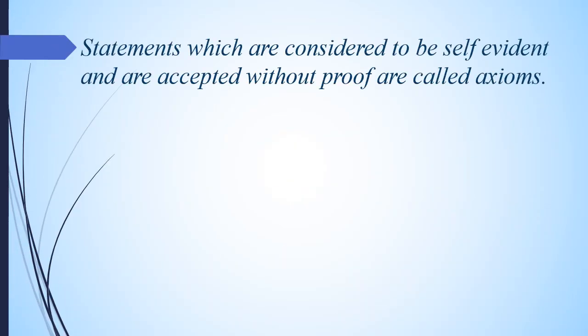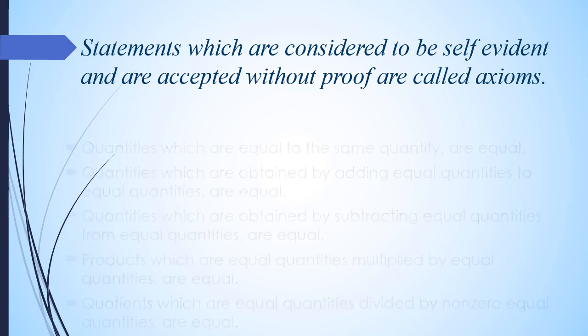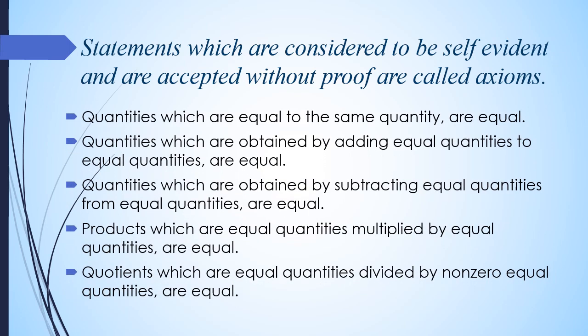Statements which are considered to be self-evident and are accepted without proof are called axioms. In this lesson we learn 5 common axioms. You can see the word 'quantity' in every statement. By quantities we usually mean lengths, areas, volumes and so on. Let's learn these axioms one by one.